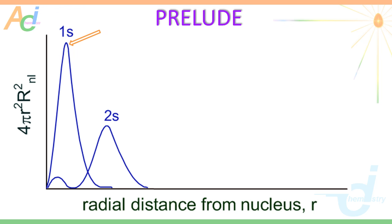Now this is the curve for the 2s orbital, and it has 2 peaks. The peak with maximum height is farther away from the nucleus when compared to the peak point of the 1s orbital. There is a trough between these 2 peaks which represents a radial node. A radial node is a region around the nucleus where the probability of finding an electron is 0.